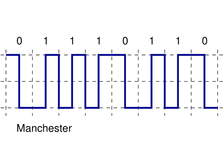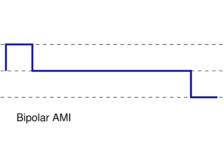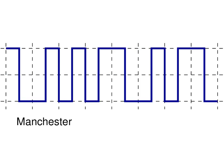What if we have a long sequence of zeros with Manchester encoding? In bipolar AMI, a long sequence of zeros caused the signal to stay at one flat level, which is bad for synchronization. With Manchester encoding, that's not a problem — because every bit, whether a one or a zero, there's always a change in the level. So the receiver always detects a change indicating a new bit. Synchronization is not a problem with Manchester encoding.